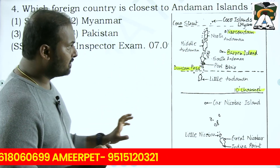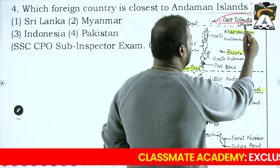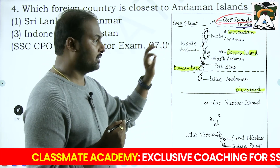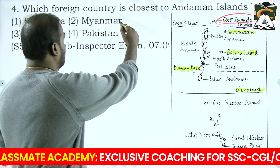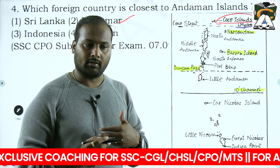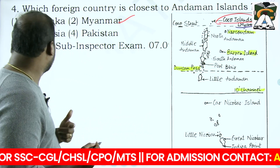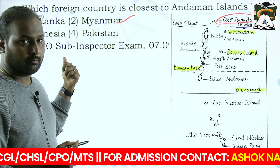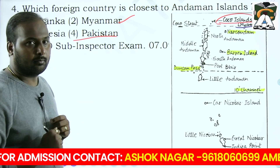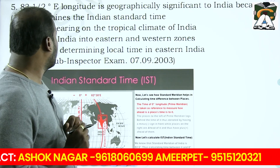'Which foreign country is closest to the Andaman and Nicobar Islands?' The Coco Islands, which belong to Myanmar, are very close to North Andaman, so Myanmar is the answer. Sri Lanka is far away. Indonesia also shares a maritime boundary with India, and Pakistan has a land boundary with India. Sri Lanka also has a maritime boundary with India, but Myanmar's Coco Islands are the closest foreign territory to Andaman.